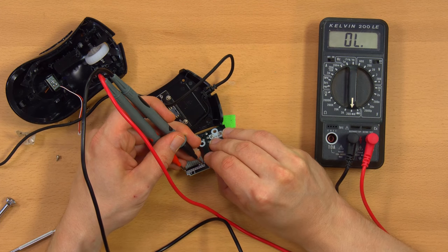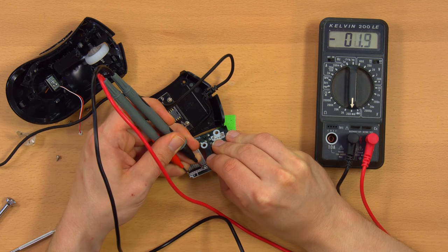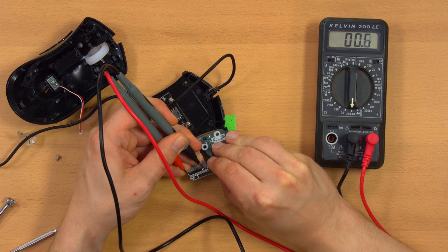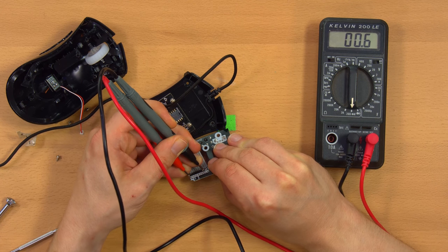With my multimeter set to continuity mode, I probed each of the connections on the ribbon cable. I guessed that there would be a common wire on one end or the other, and just by chance happened to pick the correct end on my first try. As the probe was touching each terminal, I pressed one of the mouse buttons to see if continuity resulted.